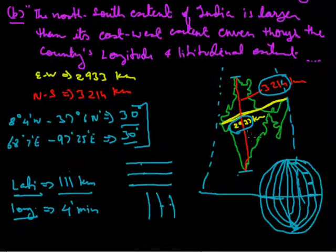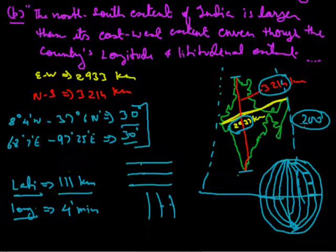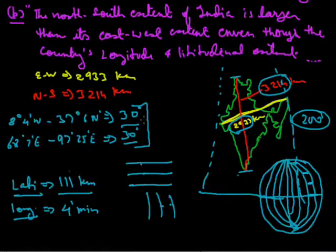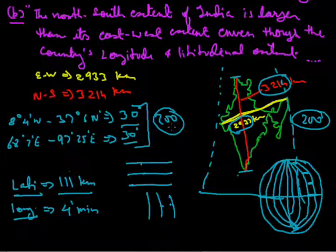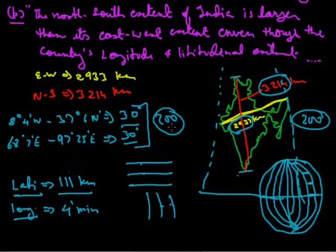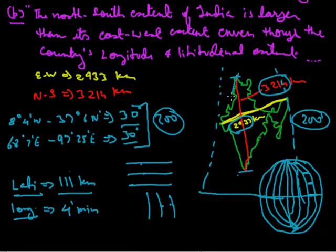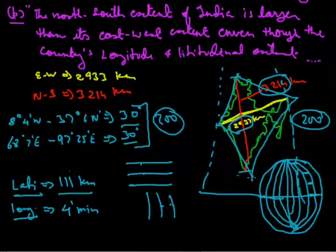We see approximately a 200-kilometre difference between the east-west extent and the north-south extent. So India is actually a rectangle in shape. And more precisely, the exact shape can be called a quadrilateral or a kite shape — that is the shape of India.